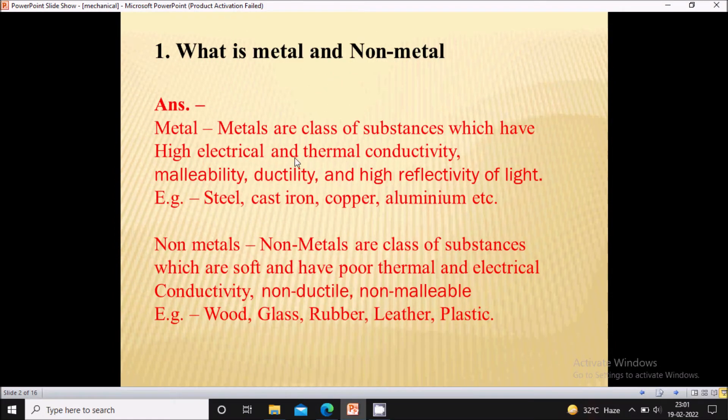So here metals are nothing but the class of substance which have high electrical and thermal conductivity, malleability, ductility and high reflectivity of light. In this way you can define the metals.